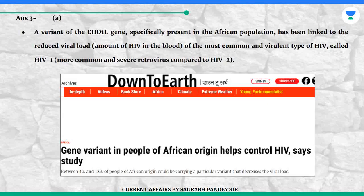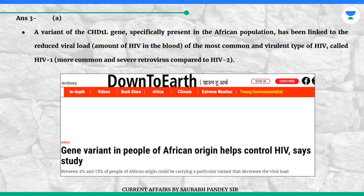A variant of the CHD1L gene specifically present in the African population has been linked to the reduced viral load — the amount of HIV in the blood — of the most common and virulent type of HIV, called HIV-1, a more common and severe retrovirus compared to HIV-2.